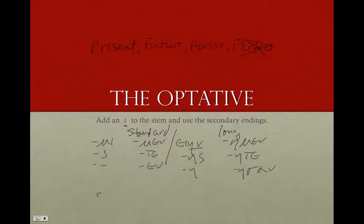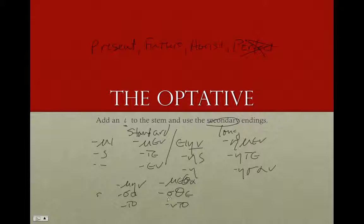Then we're going to have the middle-passive endings, which are, since it's secondary endings: -main, -so, -to — and you'll find that the intervocalic sigma will drop out — -metha, -ste, and -nto. So we'll have our active endings, standard and long versions, and then the middle and passives.